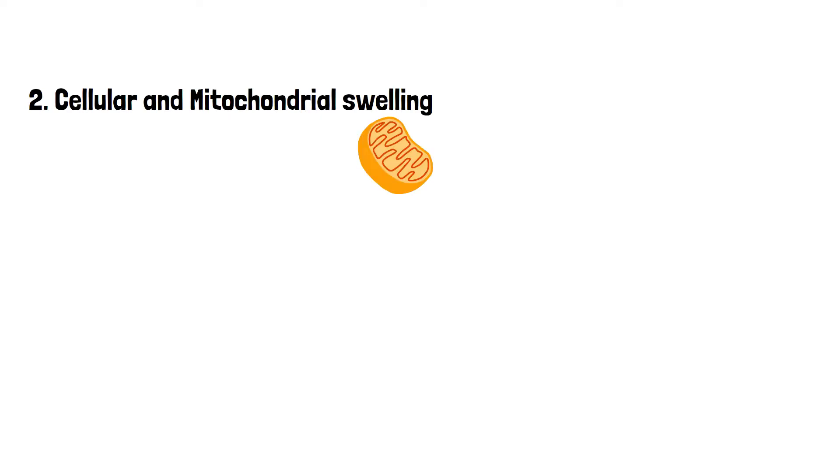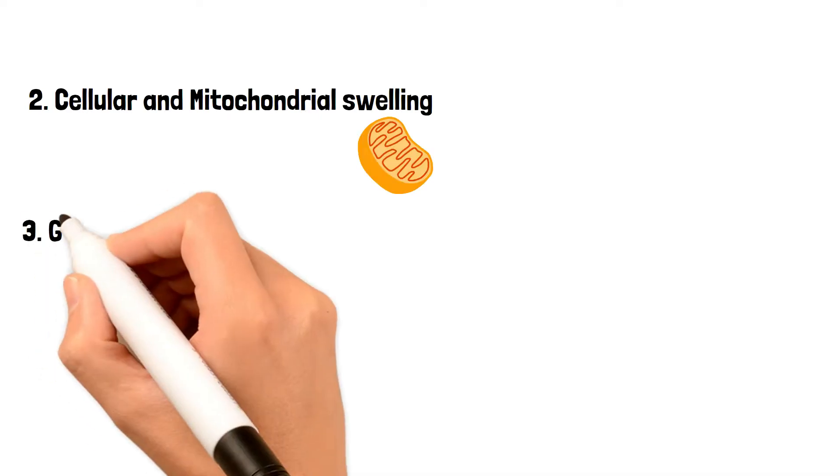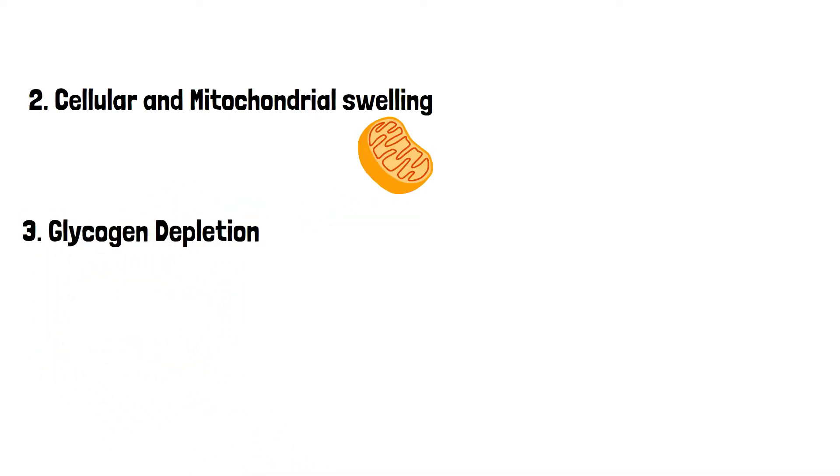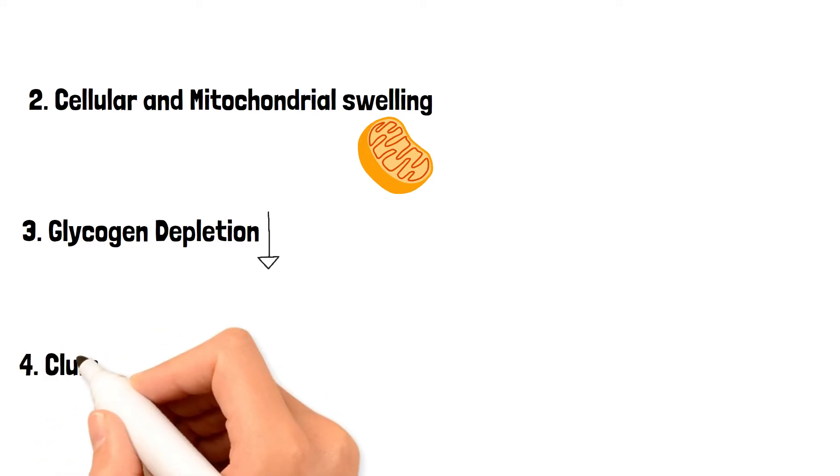Other reversible changes include cellular and mitochondrial swelling, glycogen depletion, and chromatin clumping.